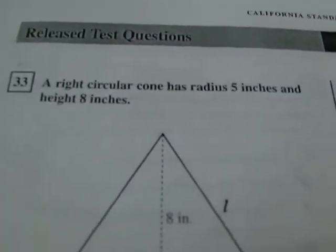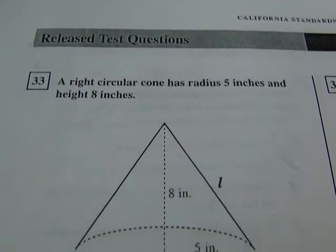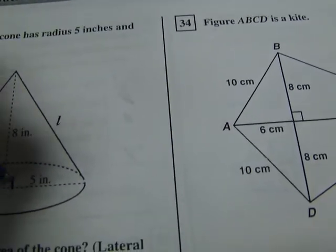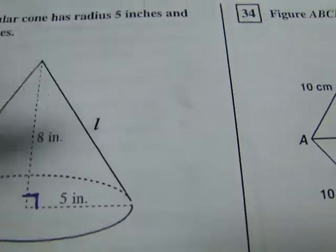Let's look at Problem 33. A right circular cone has a radius of 5 inches and a height of 8 inches. The key thing it told us was the word right. So that tells us this right away. And I see this variable L here. Anyone know what to do?